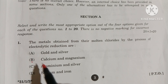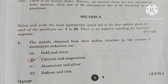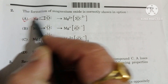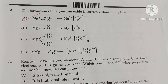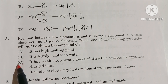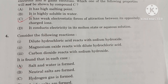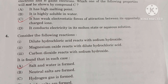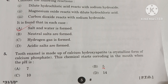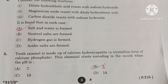In question number 1, B option is the correct option. Question number 2, A option is the correct option. Question number 3, C option is the correct option. Question number 4, A option is the correct option. And in question number 5, B option is the correct option.